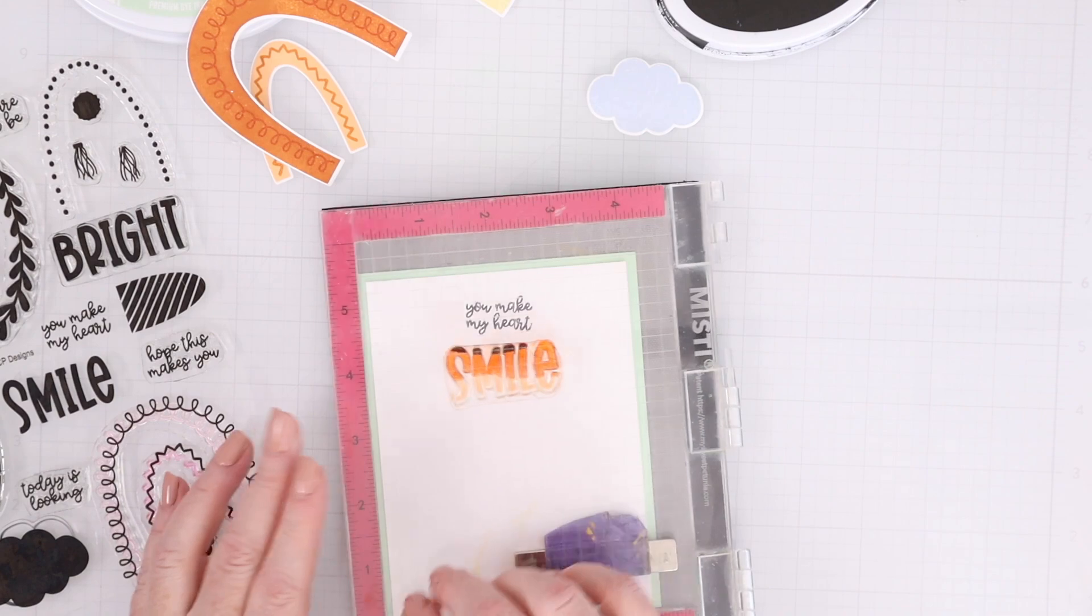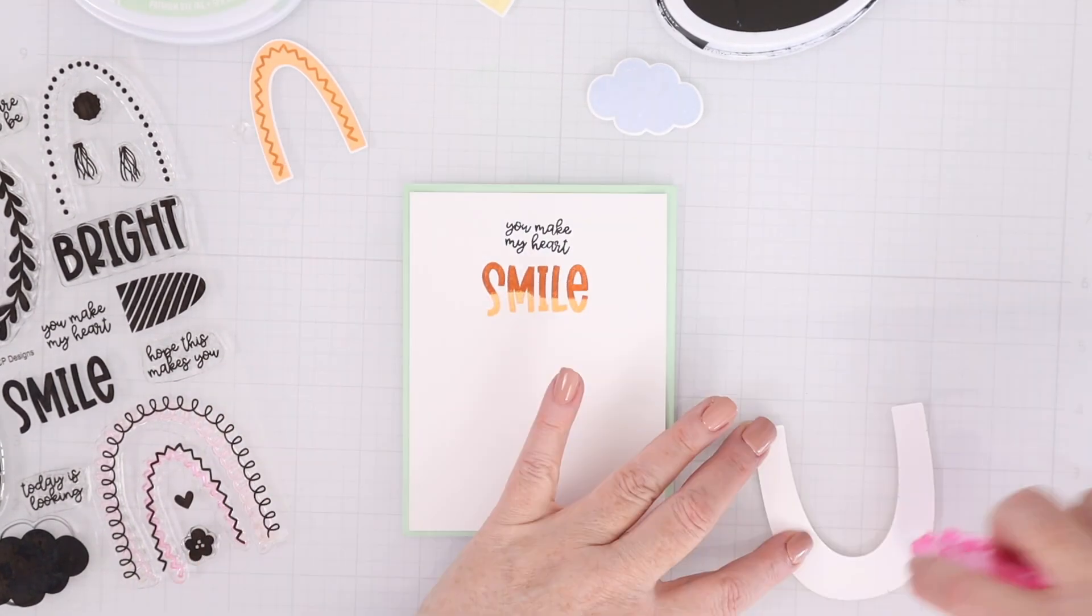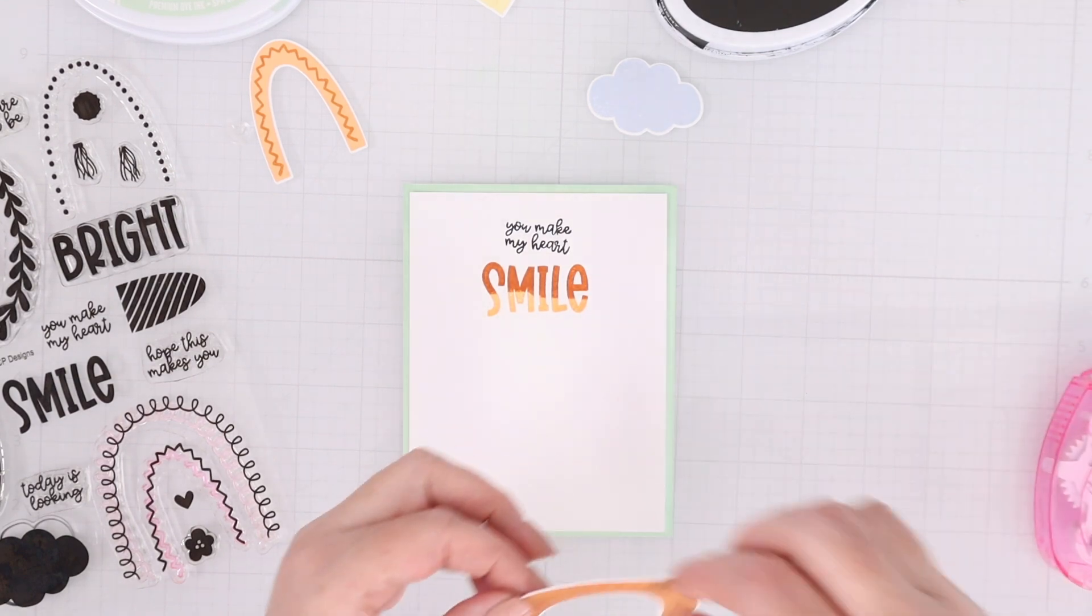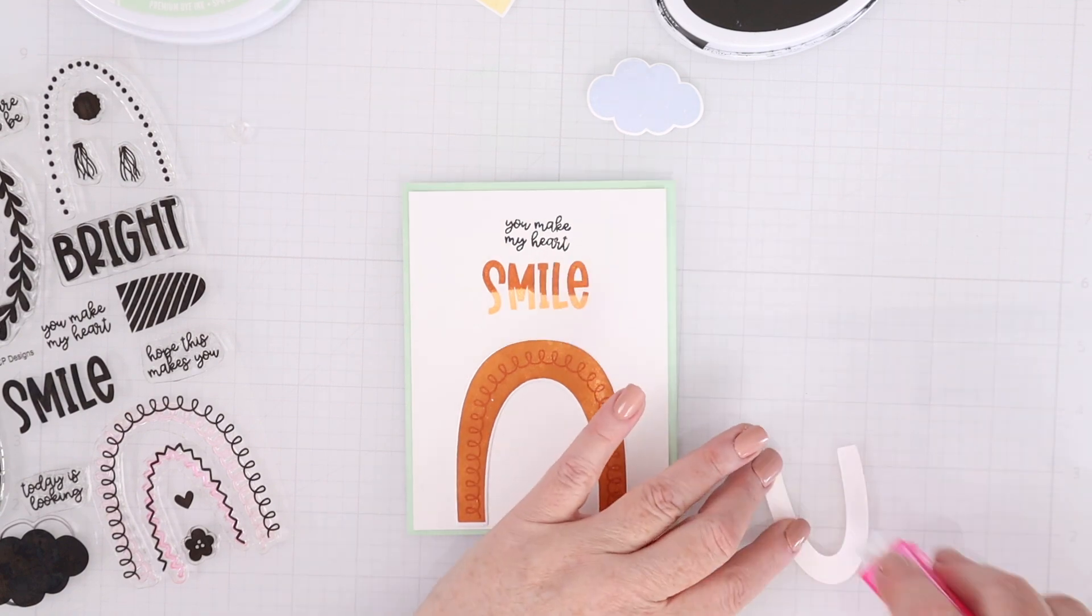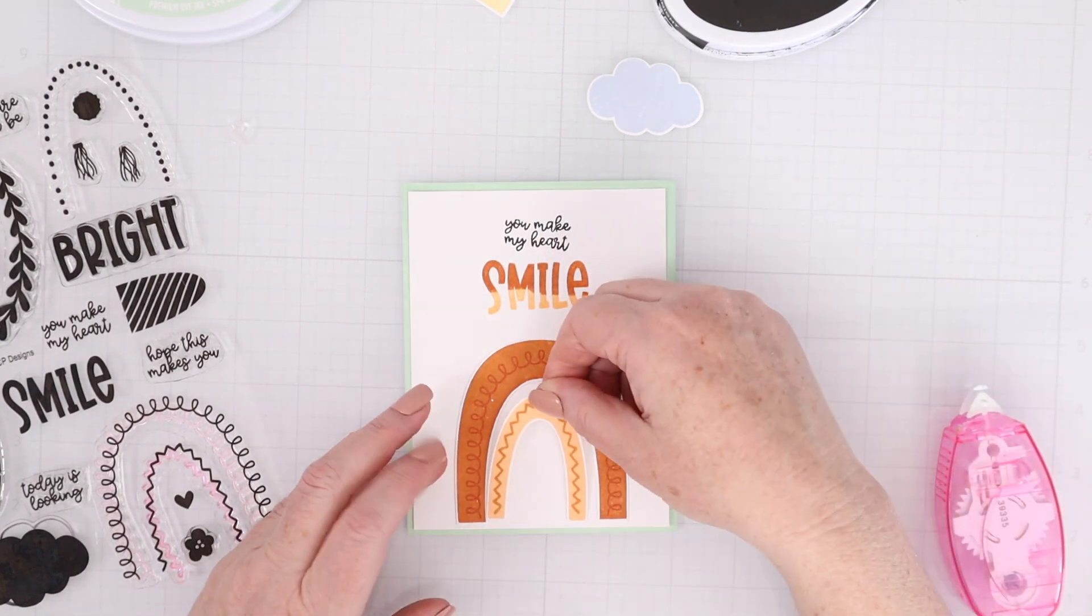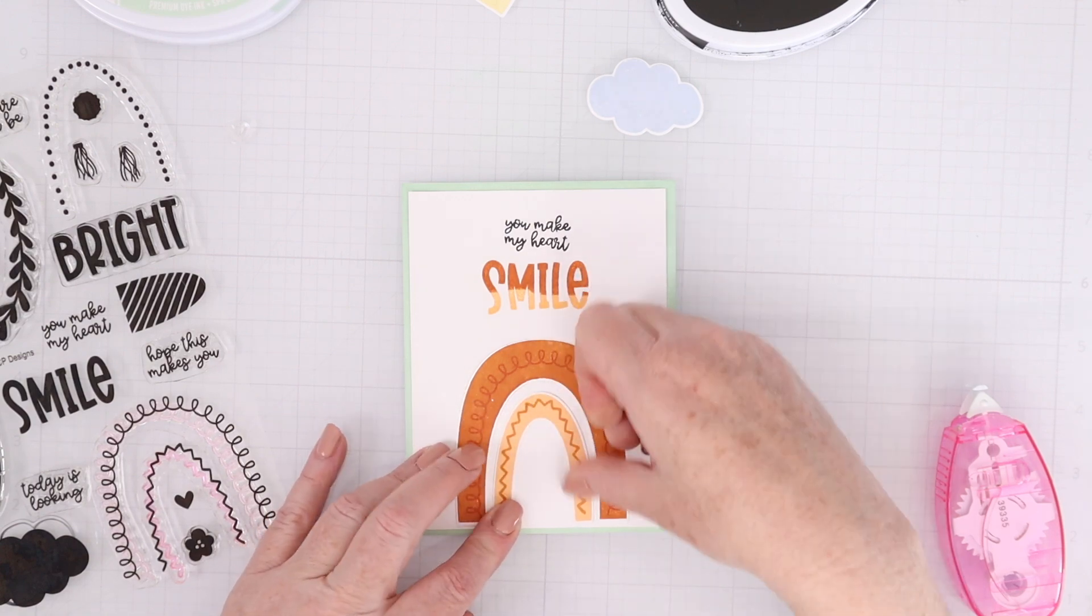I grabbed two sentiments from the stamp set. I stamped You Make My Heart and then I stamped Smile. And I first stamped it in Apricot and then just inked up the top half in Ginger and stamped that so we have that multi-color smile.